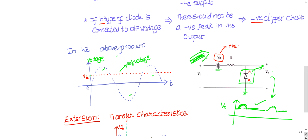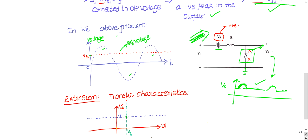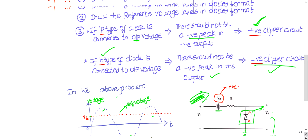Let us see the rules once again. Draw the input waveform in dotted form, draw the reference voltage in dotted form. If the P-type of the diode is connected to the output voltage, then the positive peak should be clipped off — such a circuit is called a positive clipper circuit. If the N-type is connected to the output voltage, then there should not be any negative peak — that is a negative clipper circuit. Whichever terminal connects to the output, that part gets clipped.